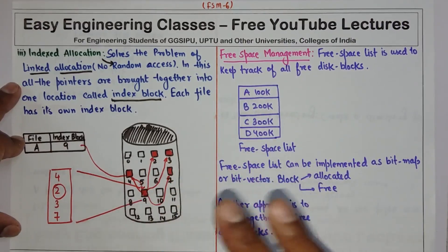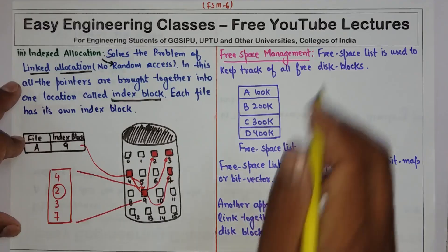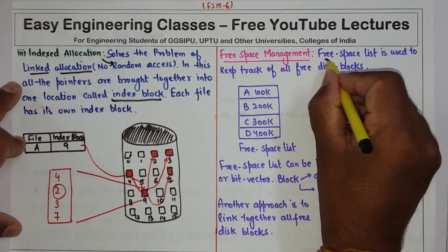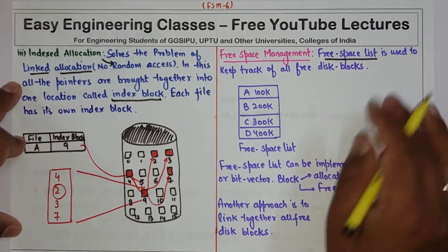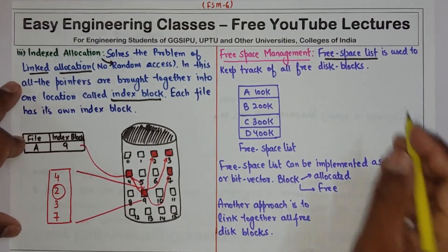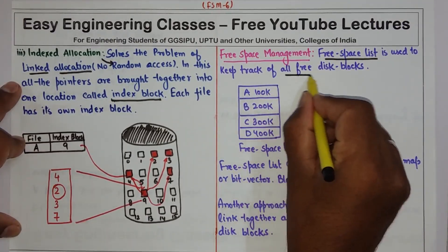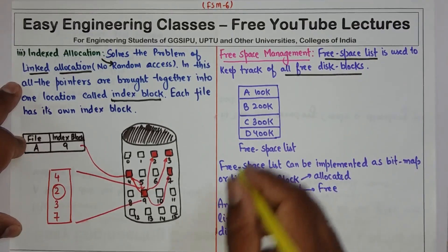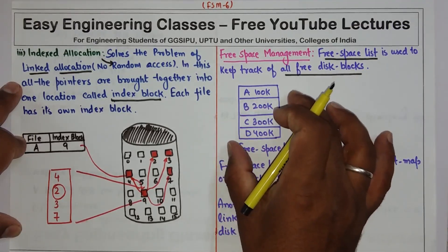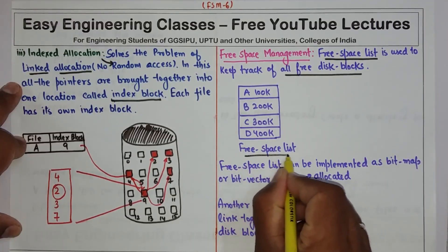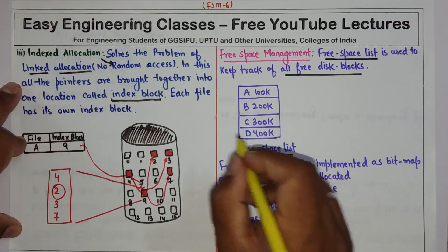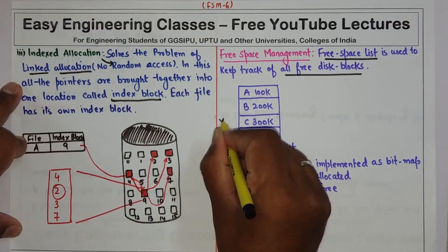A free space list is a data structure or concept which is used to keep track of all the free disk blocks. For example, I have created a sample free space list just for explanation purposes. Now if there is a file, say X, of 150k, and I have to allocate space from this free space list.